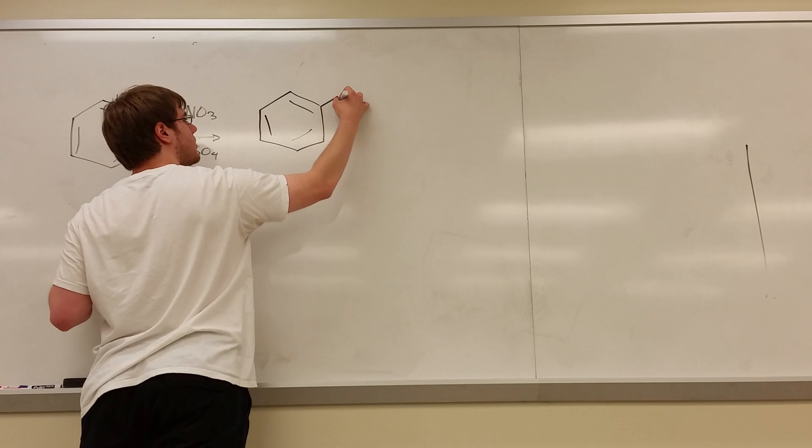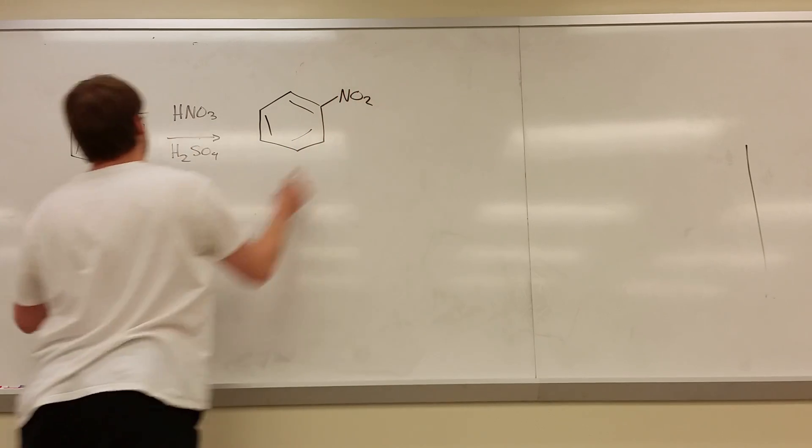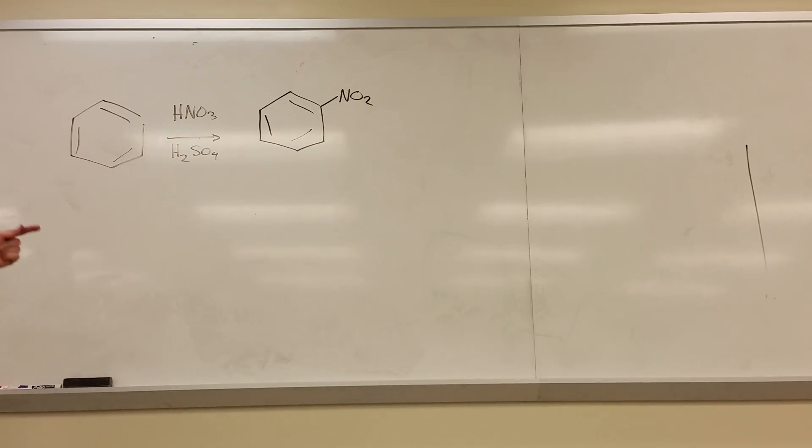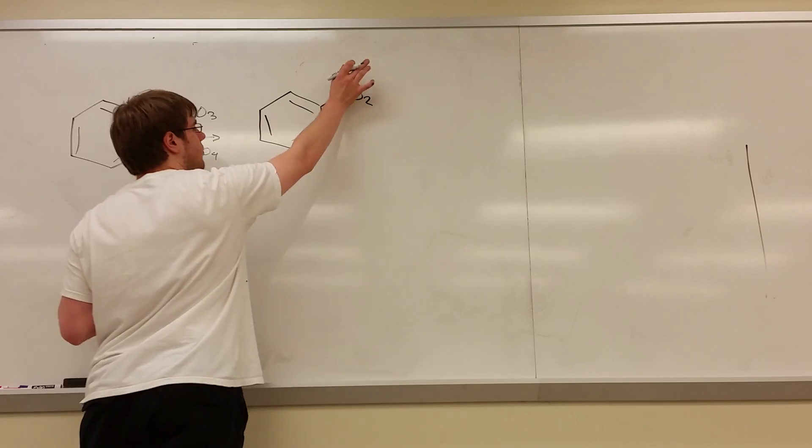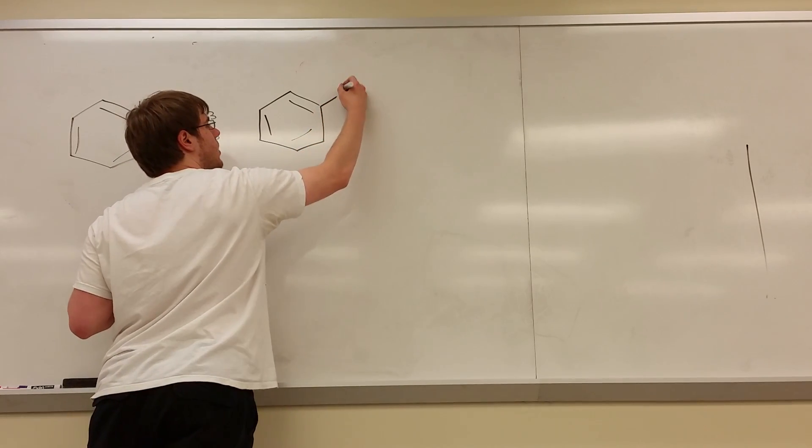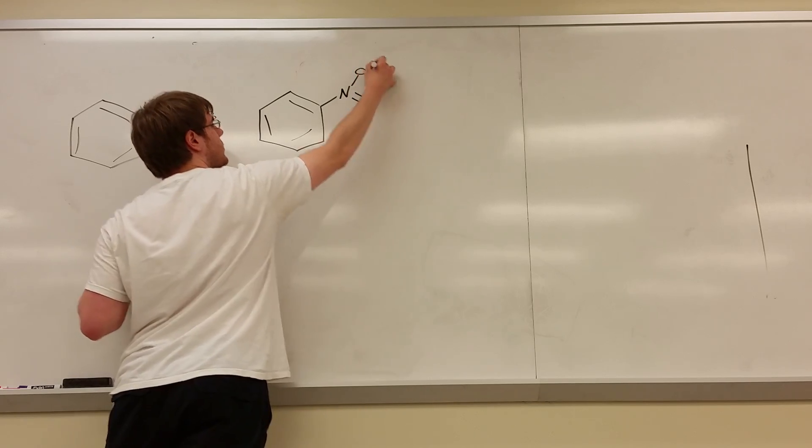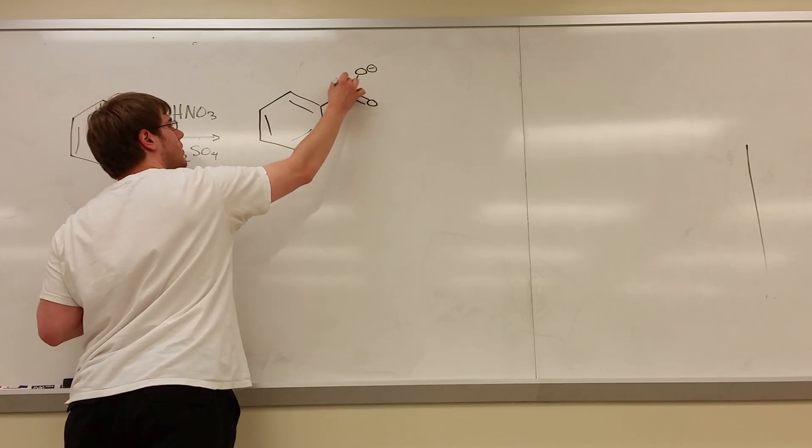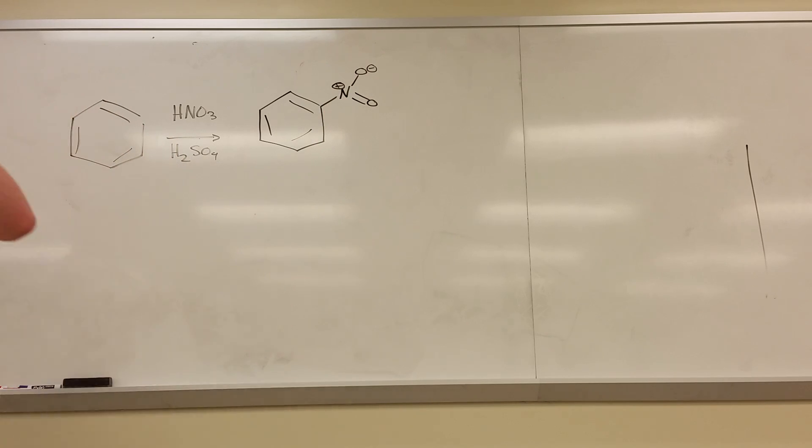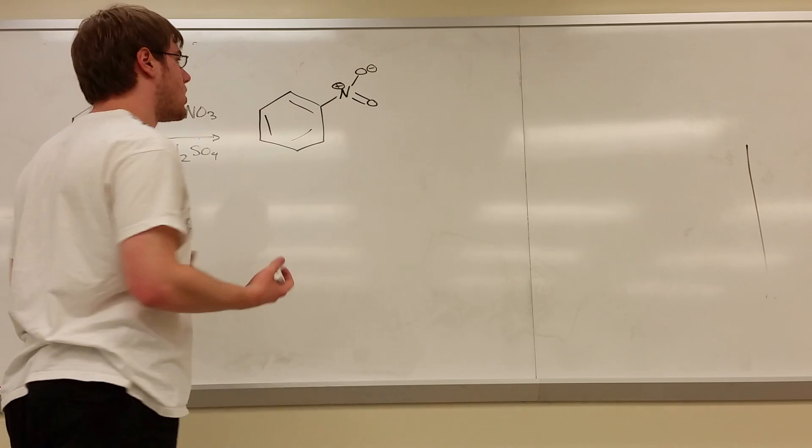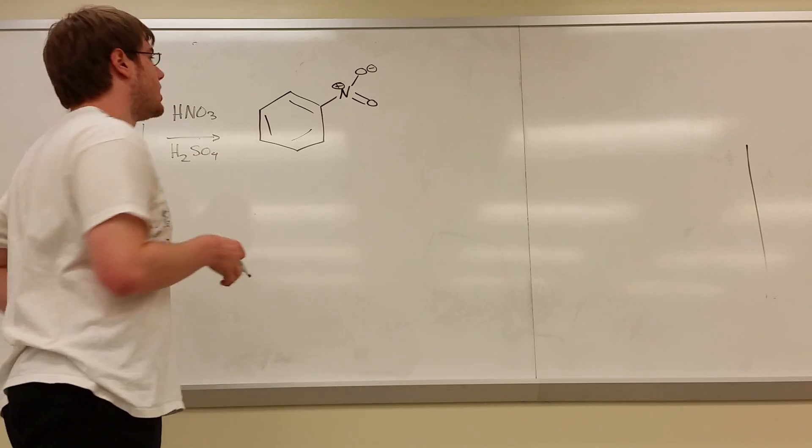So we have an NO2 added to the benzene ring. Since there's no directing group, it doesn't really matter where I put it yet, but it'll matter later. Let's draw out what NO2 looks like: double bond O, O-. This is what NO2 will look like, N positive. And remember, NO2 is a very strong electron withdrawing group. That'll be relevant in a little bit.